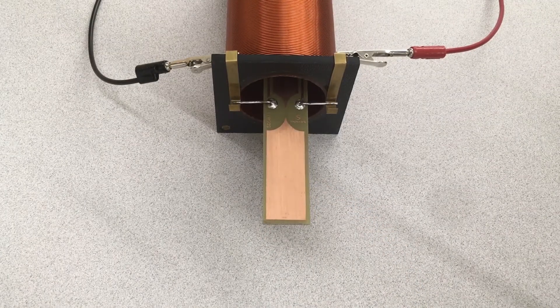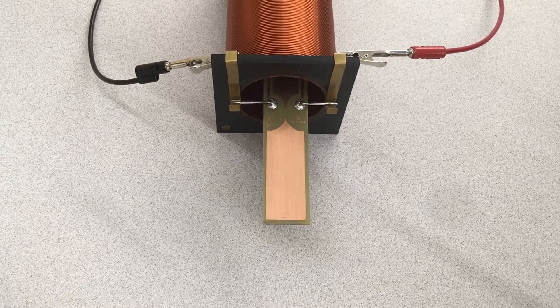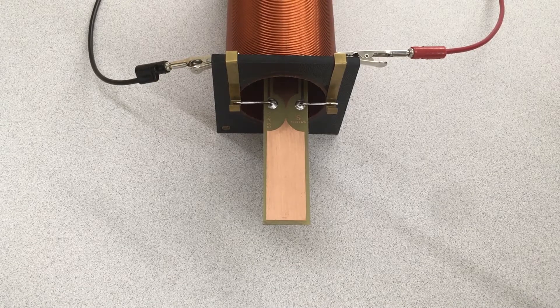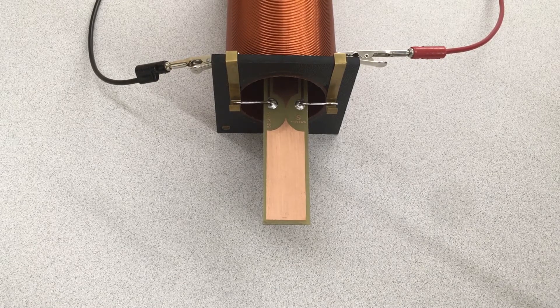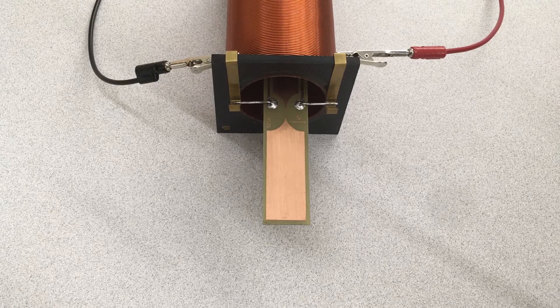Once you have balanced the current balance, you can mark the horizontal position using an index card. This will help you easily return to horizontal later in your experiment.